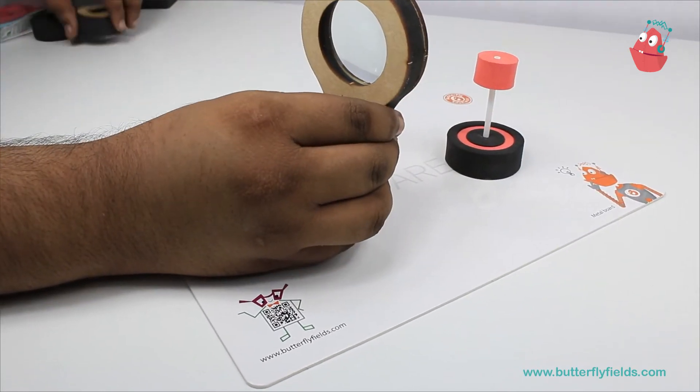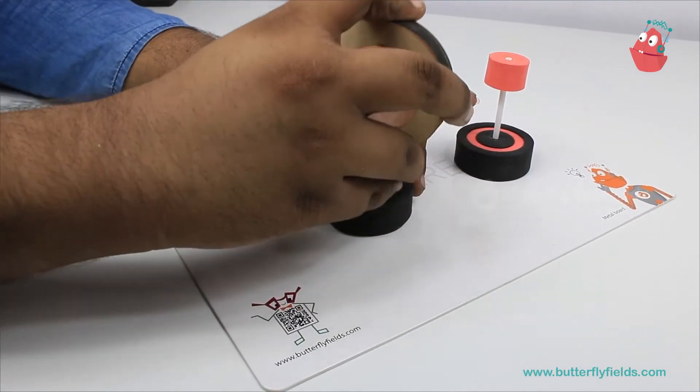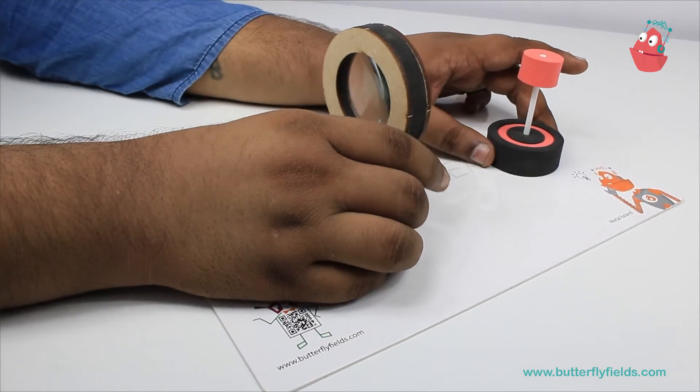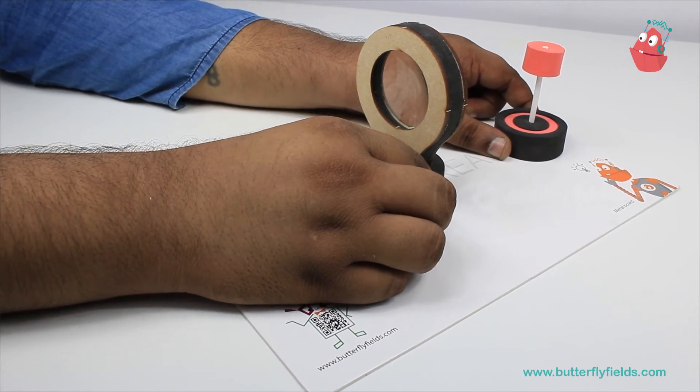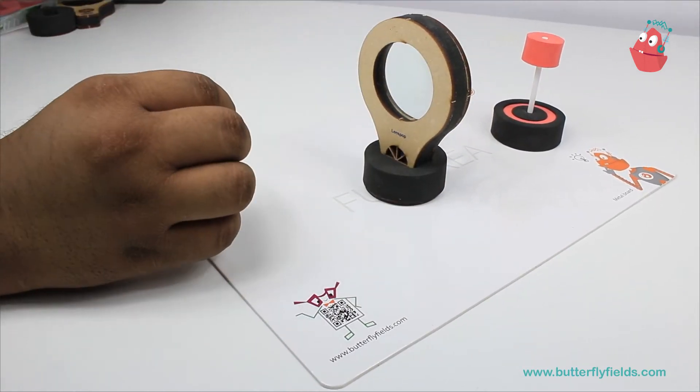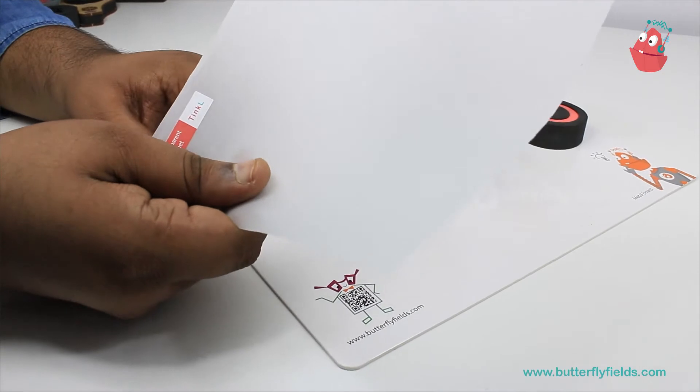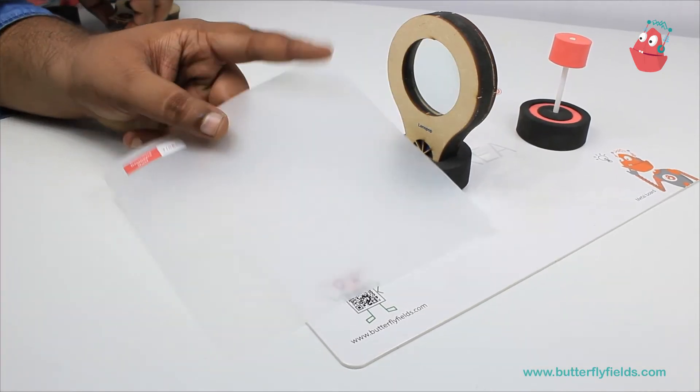Now we have to capture this object's image. To capture its image, we need a screen. For that, I will use this butter paper. I will take another half pop and put it on the stand.